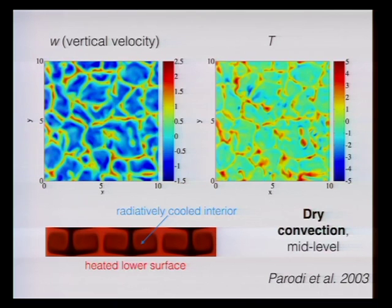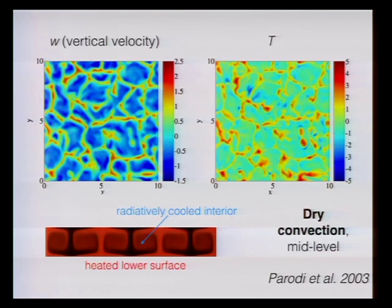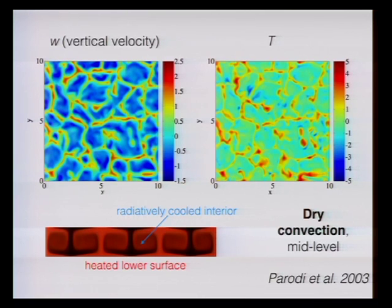This turbulence in the boundary layer can be modeled. What I'm showing here is a numerical simulation of turbulence in an atmosphere with no water vapor, and you get something that looks a fair bit like the patterns I've shown before — not hexagons, but cells. You get intense upward motions along the boundaries of the cells and broader sinking motions in the middle. These are driven by buoyancy: warm air is the air that's rising and cool air is sinking.